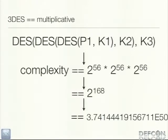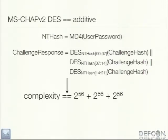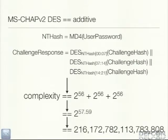But when we go back and look at our core problem, there's no nesting here. This isn't a nested construction — one DES operation has no effect on any other DES operation. They're totally independent of each other; it's just encrypting the same plain text three different times with three different keys. So that is not triple DES. That actually gives you additive complexity where your key space is 2^56 + 2^56 + 2^56, which is 2^57.59.